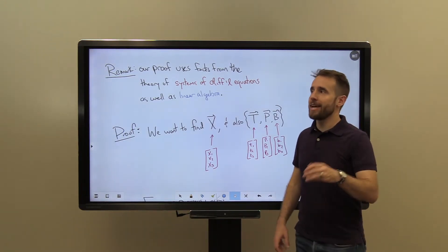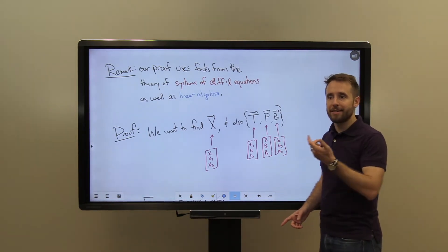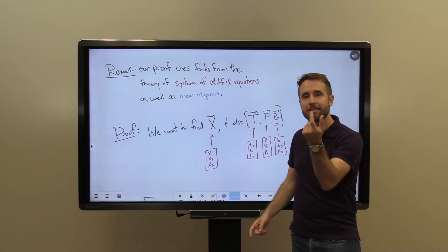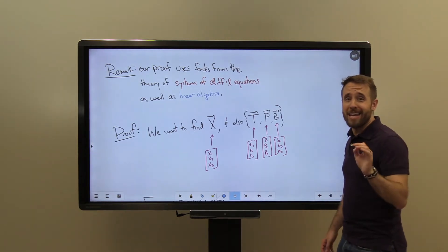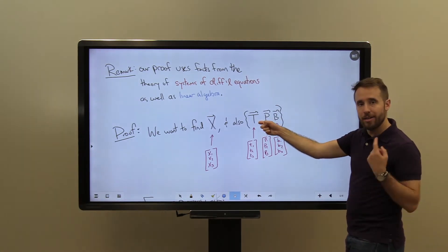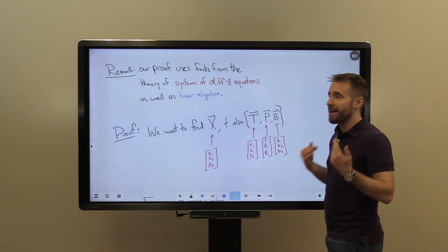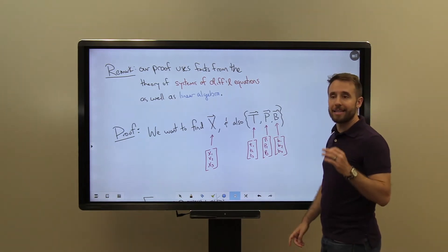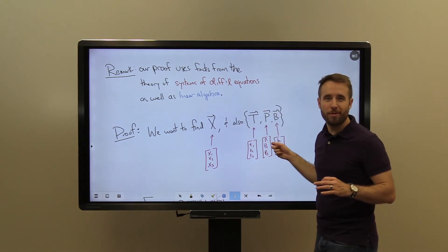Our ultimate goal, given kappa(s) and tau(s), is to find a parametrized curve X on some interval with that curvature and torsion. I'll also identify the Frenet frame: the unit tangent T, principal unit normal P, and unit binormal B. Finding these three helps identify X, so my big goal is to find X, but I'm really looking for all four simultaneously. Since these are all vector-valued functions in R3, my X has three components — X1, X2, X3 — each a function of the parameter s.